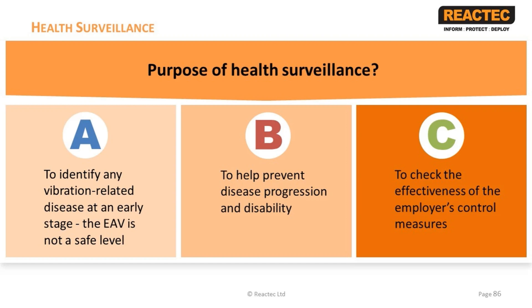In the case of hand-arm vibration, one of the specific aims is to prevent employees developing hand-arm vibration syndrome, or HAVs, which is associated with disabling loss of hand function. It is possible that employees exposed to vibration may already have mild symptoms of HAVs without being aware of it, and health surveillance can help them recognize that the first symptoms of HAVs have started to develop.